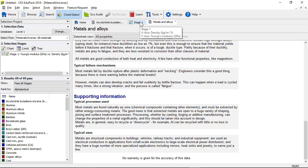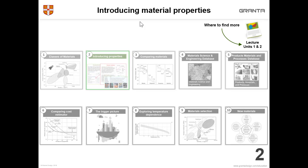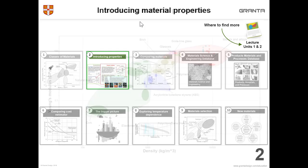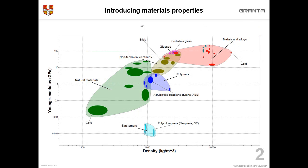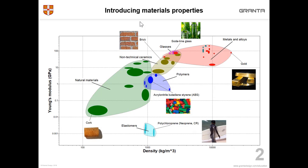Going now back to the presentation, we're on to tip number two: introducing properties. There is a labelled chart similar to what we've just seen, and on top of that I've put pictures from the records. We've chosen specific materials that the students will know from their own life experience — brick, cork, gold, Lego, etc. And you can create a chart like this using the custom subsets.